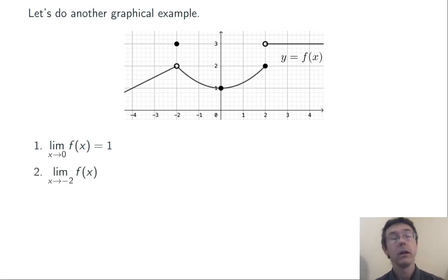Problem 2. Limit as x goes to negative 2 of f(x). We use the same logic. We imagine being nearby x equals negative 2, though not at x equals negative 2, and ask, what kind of y values are we seeing?